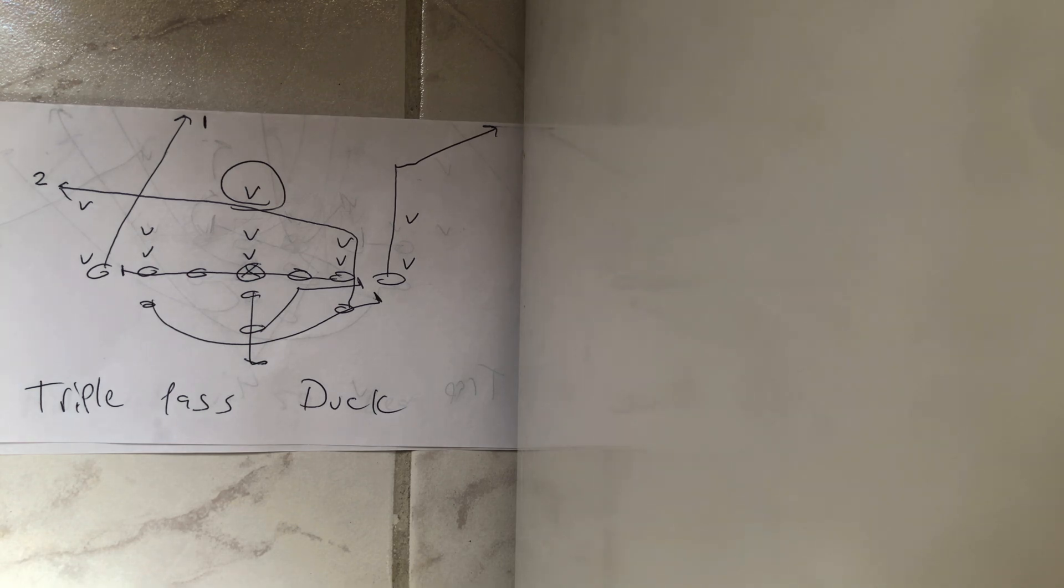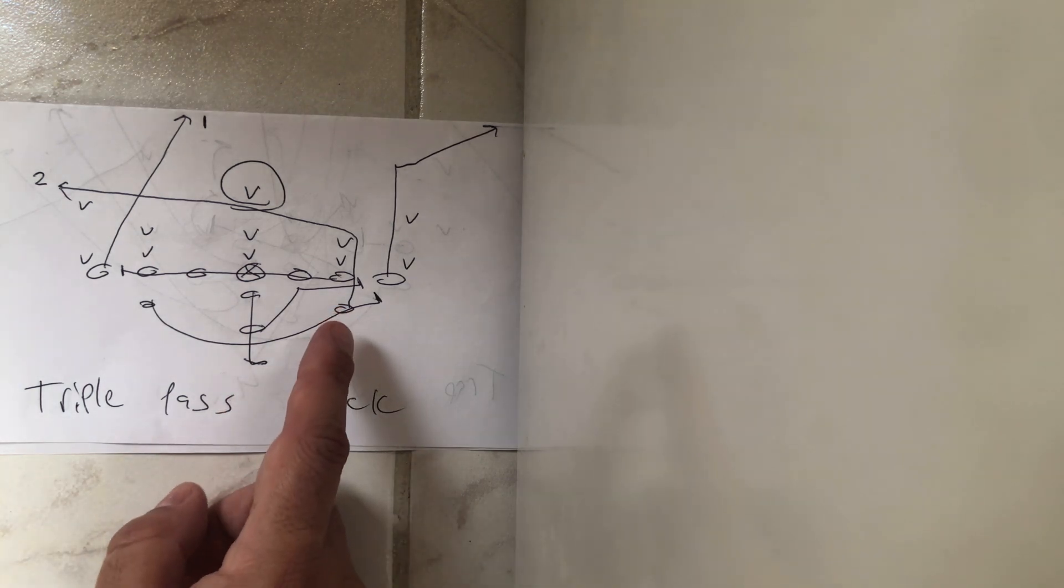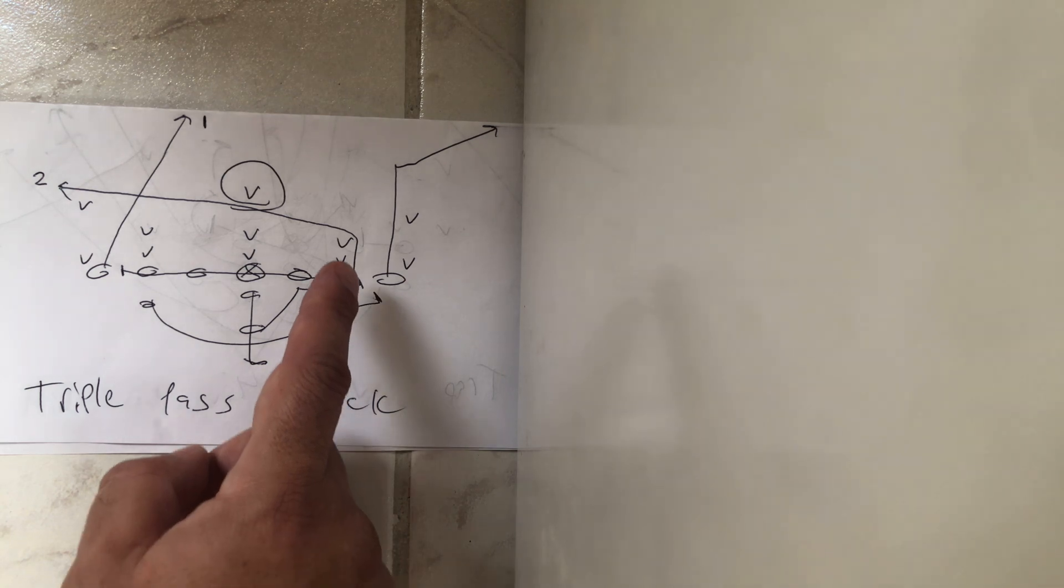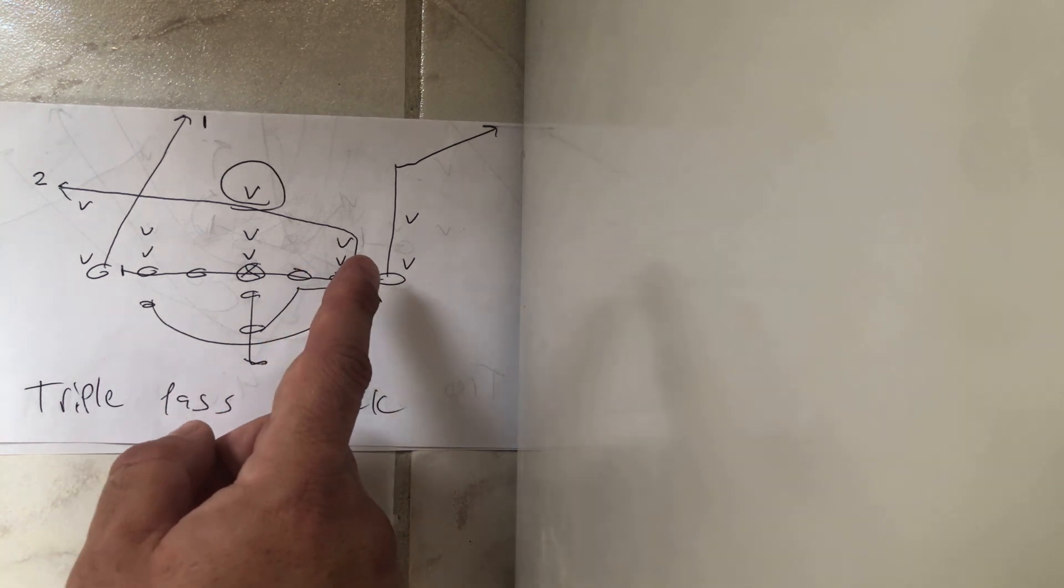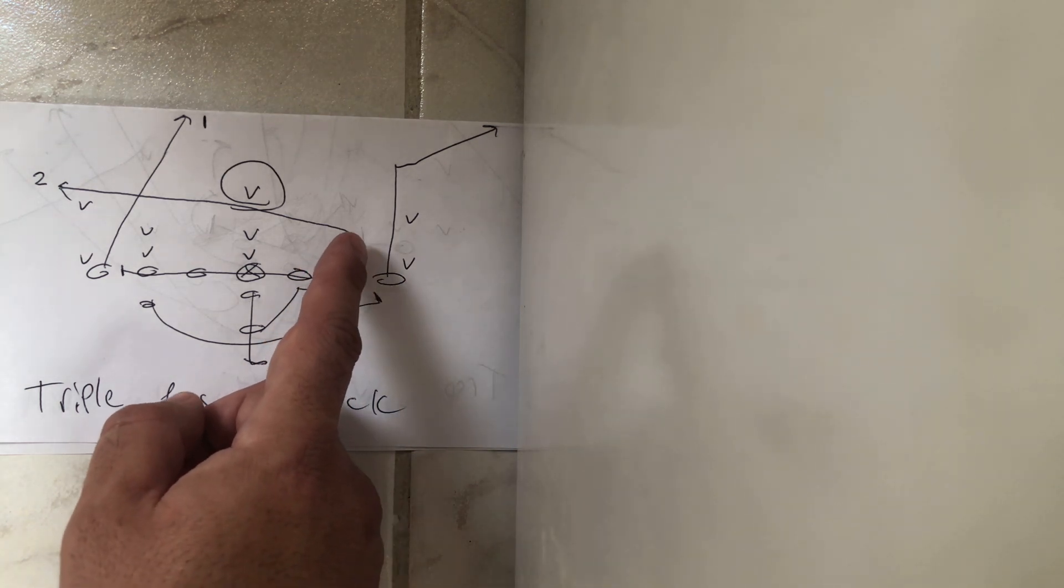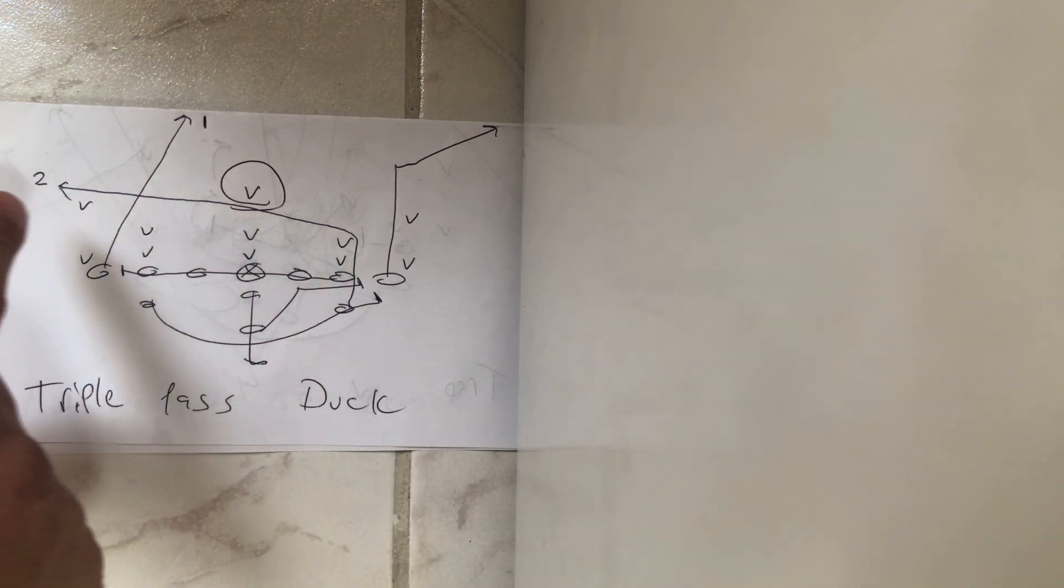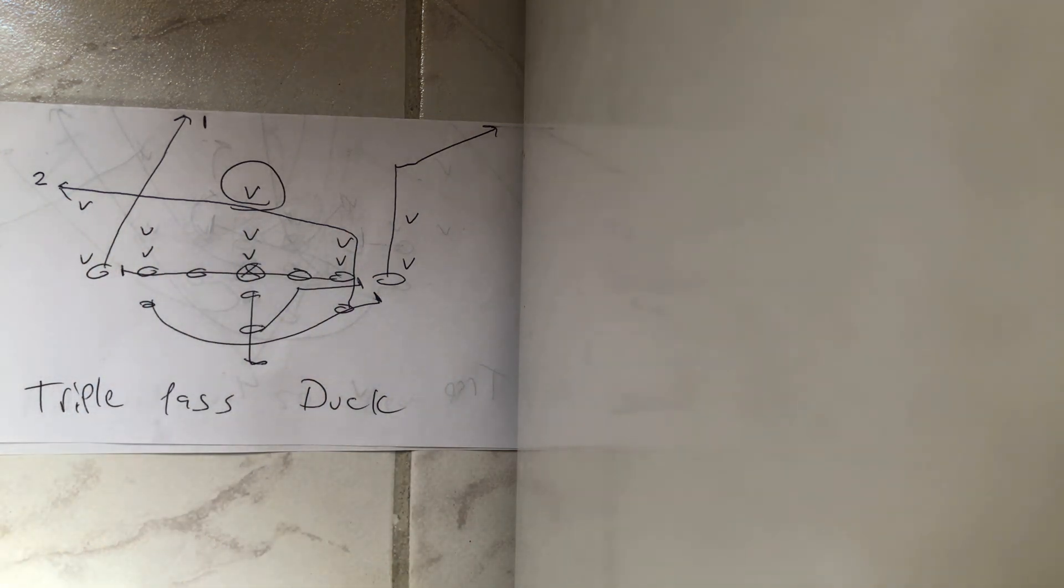So here are the routes. The play side A-back, he is going to step with his inside foot first. He's going to get to six yards. Once he gets to six yards, he gets about 15 degrees diagonal and he'll end up dragging at about eight yards.